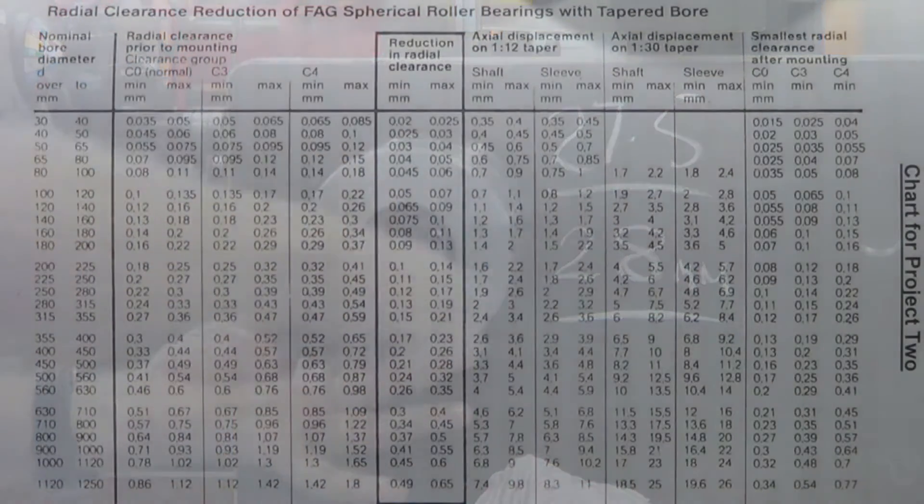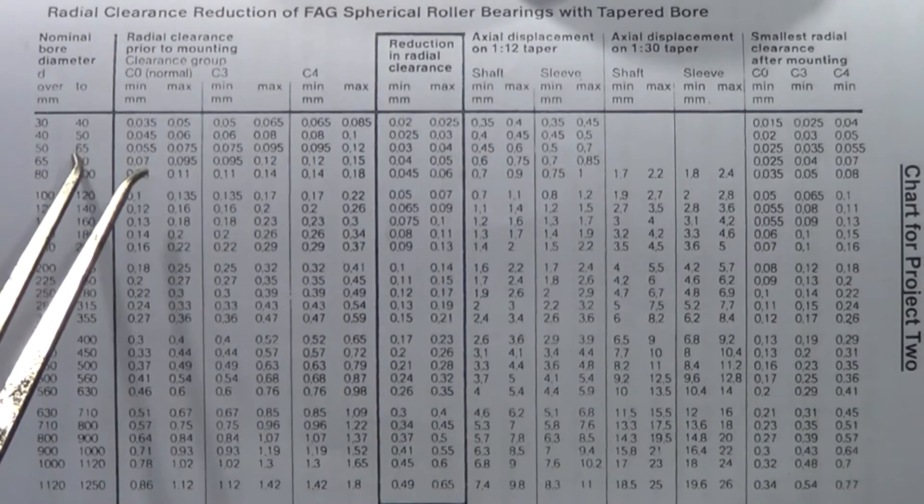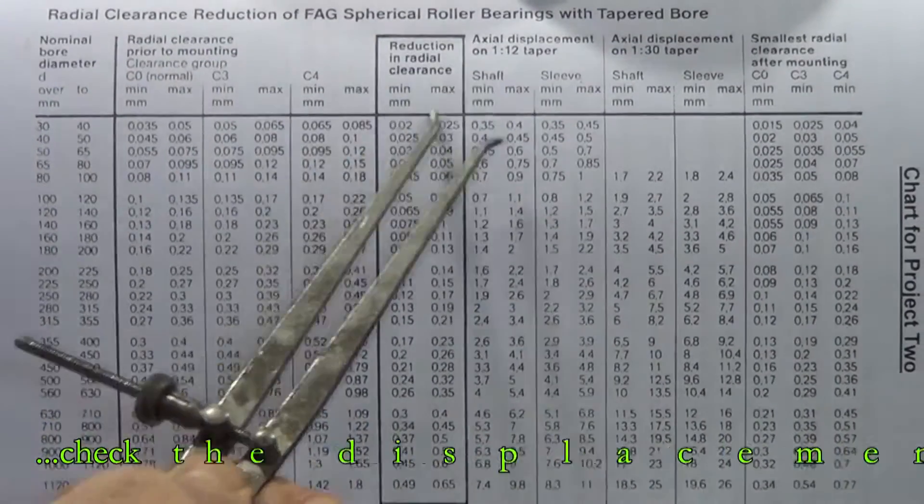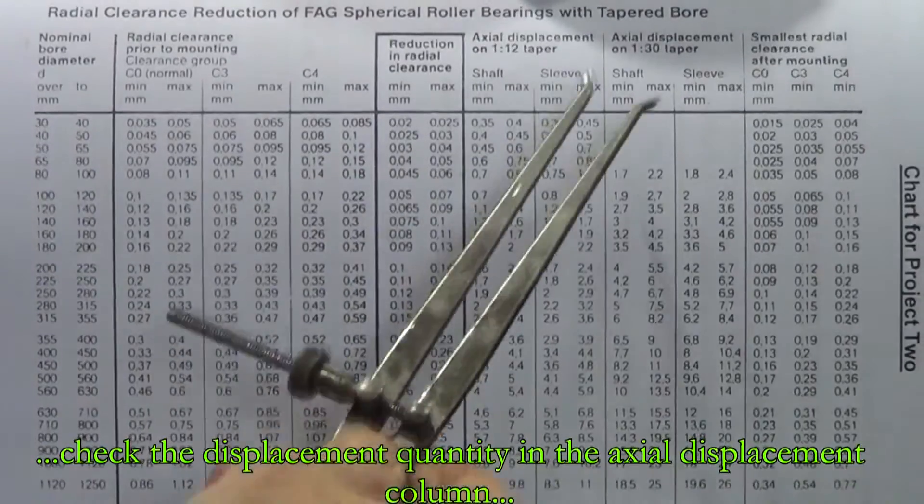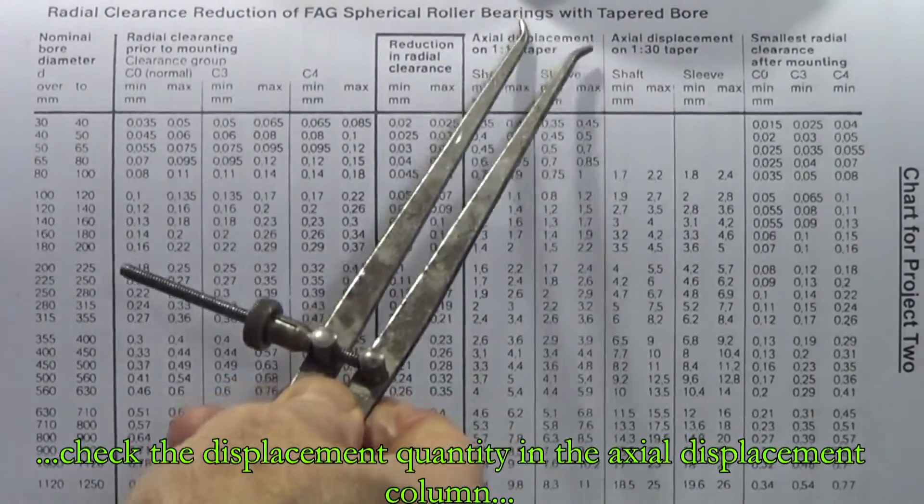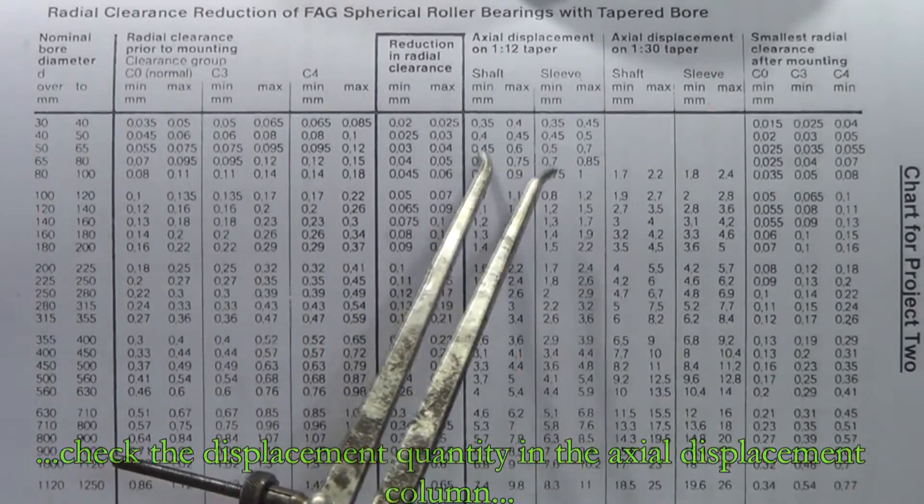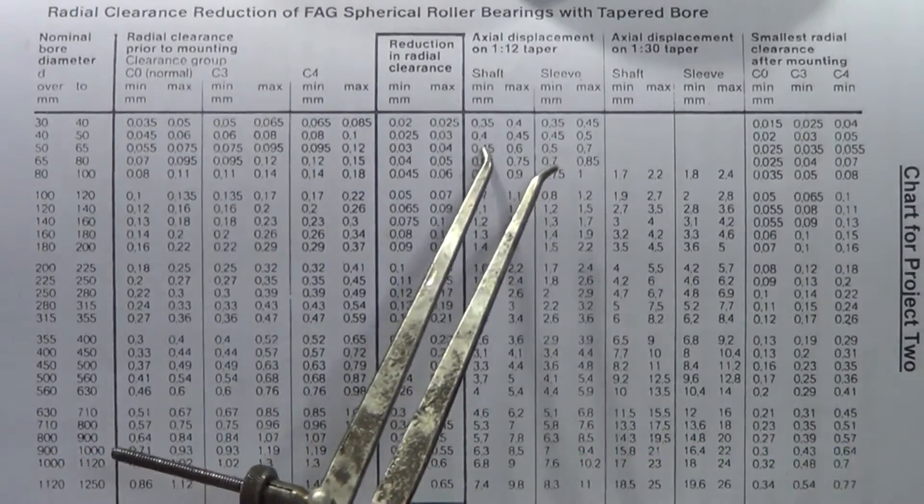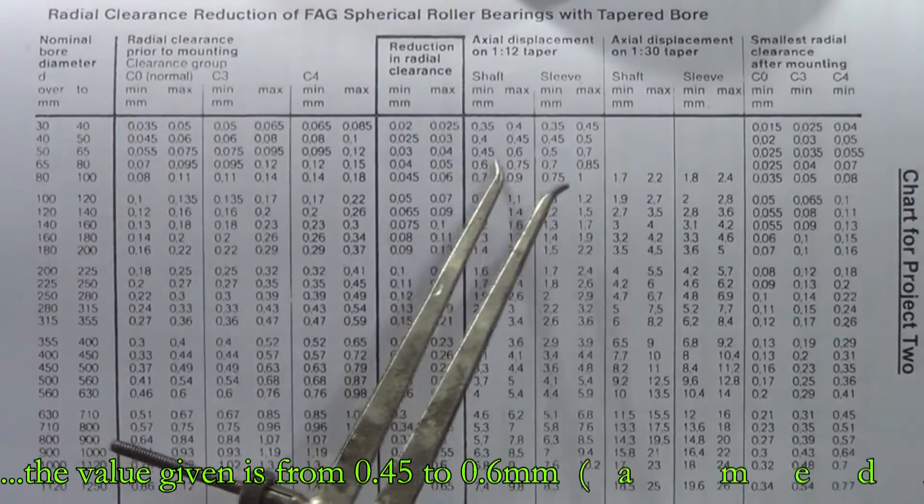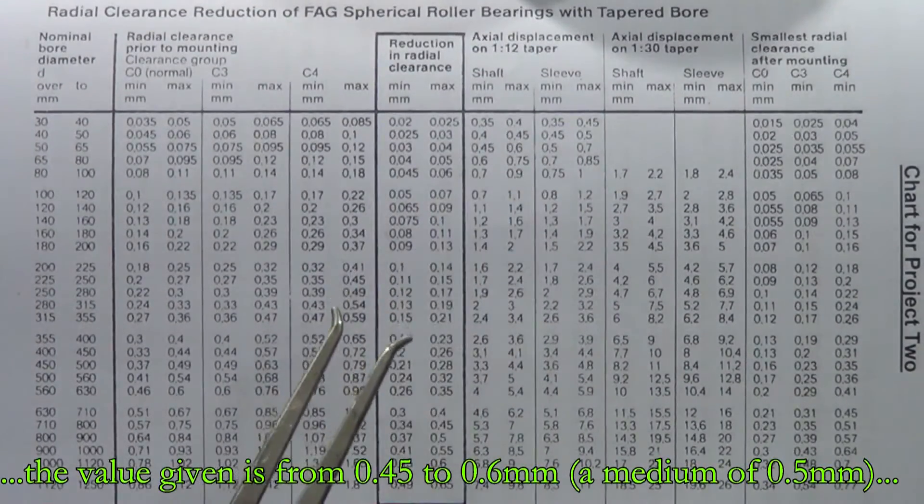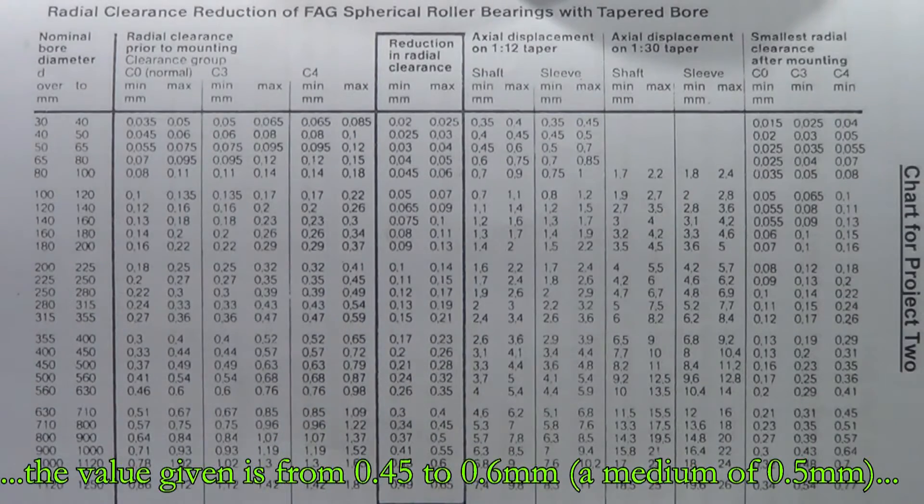Let's have a look at the specifications and see what is called for in the axial reduction or axial displacement. We just move across the line, you can see that it's from 0.45 to 0.6, so 0.5 of a millimeter would be right in the center of that. So our drive up of the bearing should be just about right.